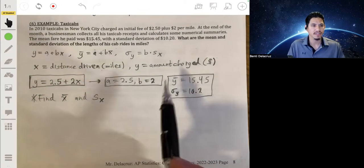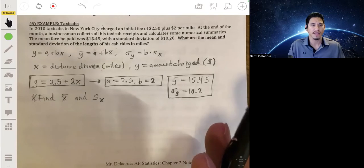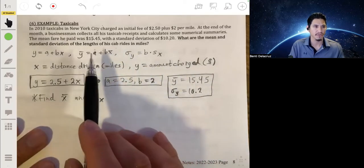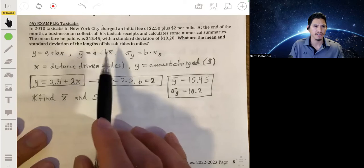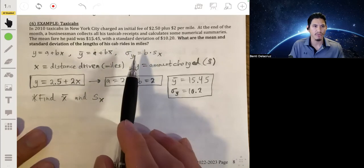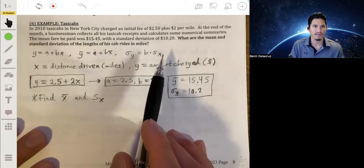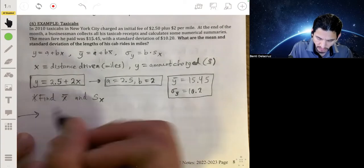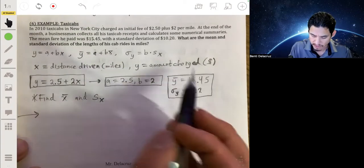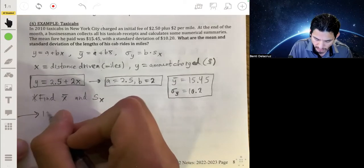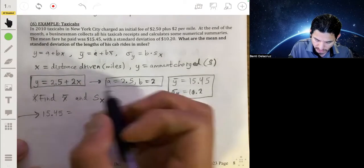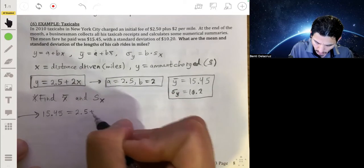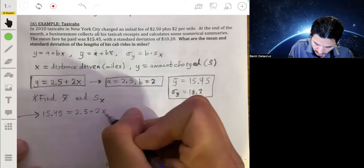So we're essentially pretty much done with the problem in terms of what we need to do to solve. Because you're given all your quantities where you know y bar, a, and b are. We're just going to solve this for x bar. And we know what the standard deviation of y and b are. So we're just going to solve this for standard deviation of x. So let's go ahead and solve this. Let's solve for x bar by substituting 15.45 into the left side and making that equal to 2.5.